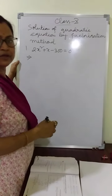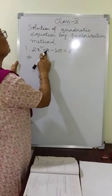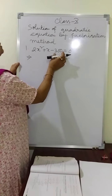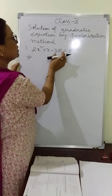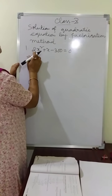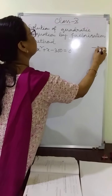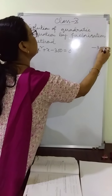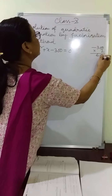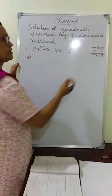At first we have to factorize by splitting the middle term. You multiply the constant term by the leading coefficient x squared. That is minus 300 into 2, you will get minus 600.